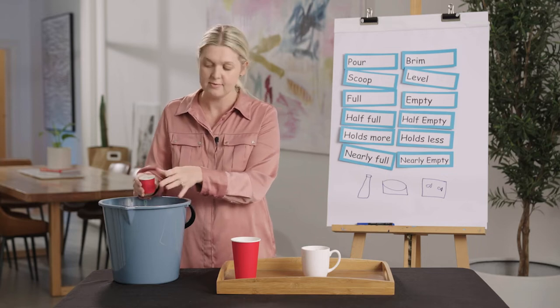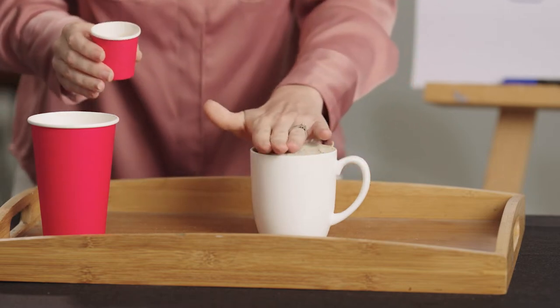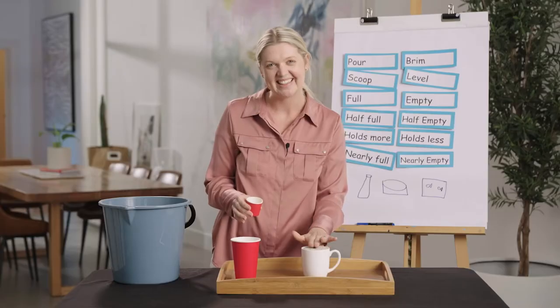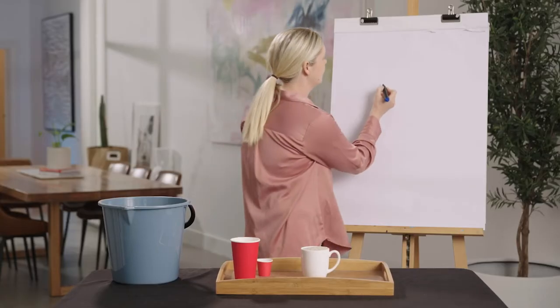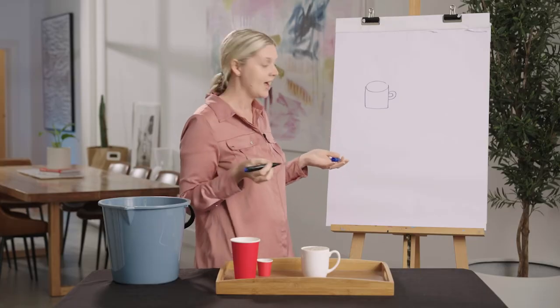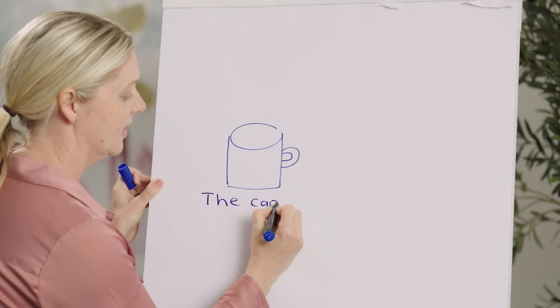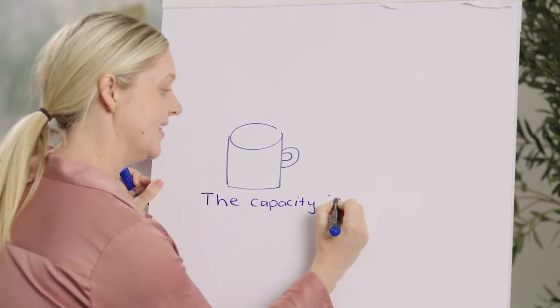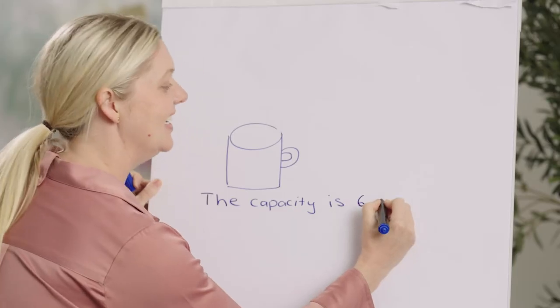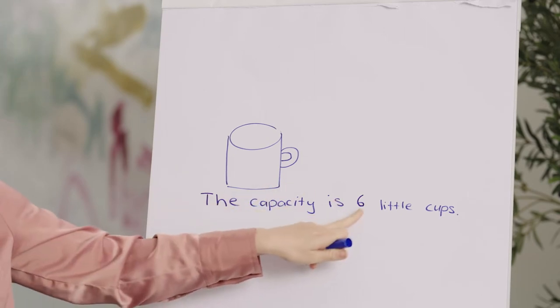Scoop and level. Very carefully. I'm going to pat it down. What do you think, everyone — is it full to the brim? I think so. The mug has a capacity of six little cups. Let's record that. I'm going to draw my mug first — here's the mug and here's the handle. And I'm going to write what I discovered: the capacity is six little cups.